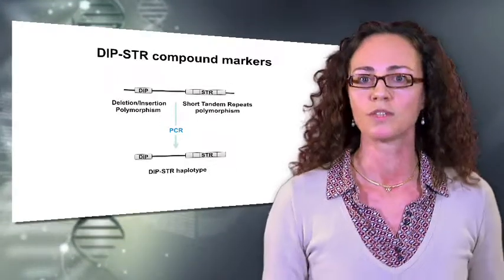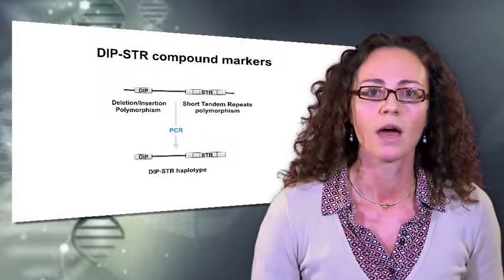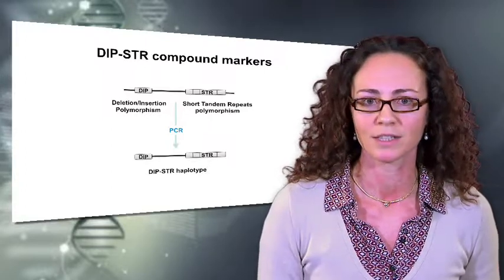The combined analysis of these two polymorphisms identify Deep STR haplotypes that are highly variable and about 300 base pairs in length.